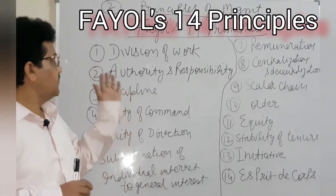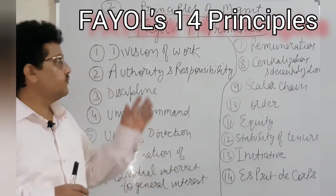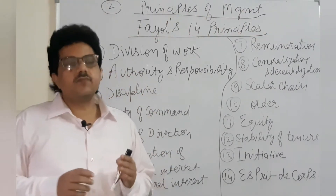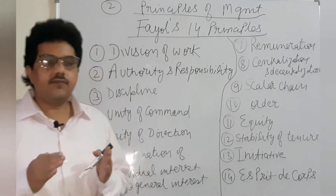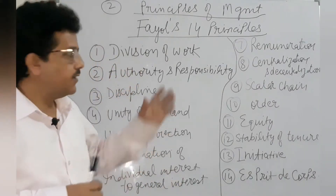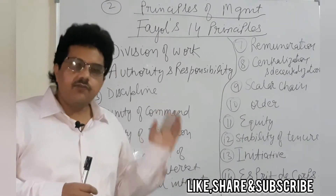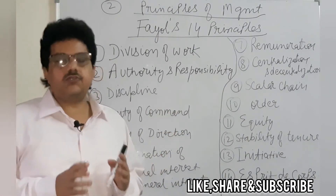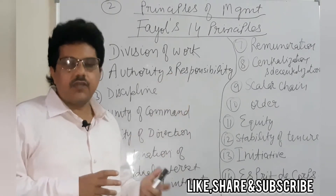First we will start with Fayol's 14 principles, but before that let me tell you what we mean by principles of management. Principles means 'Siddhant' — there are some principles on which our whole management functions are decided. Henry Fayol was the person who, through his research, gave these 14 principles.